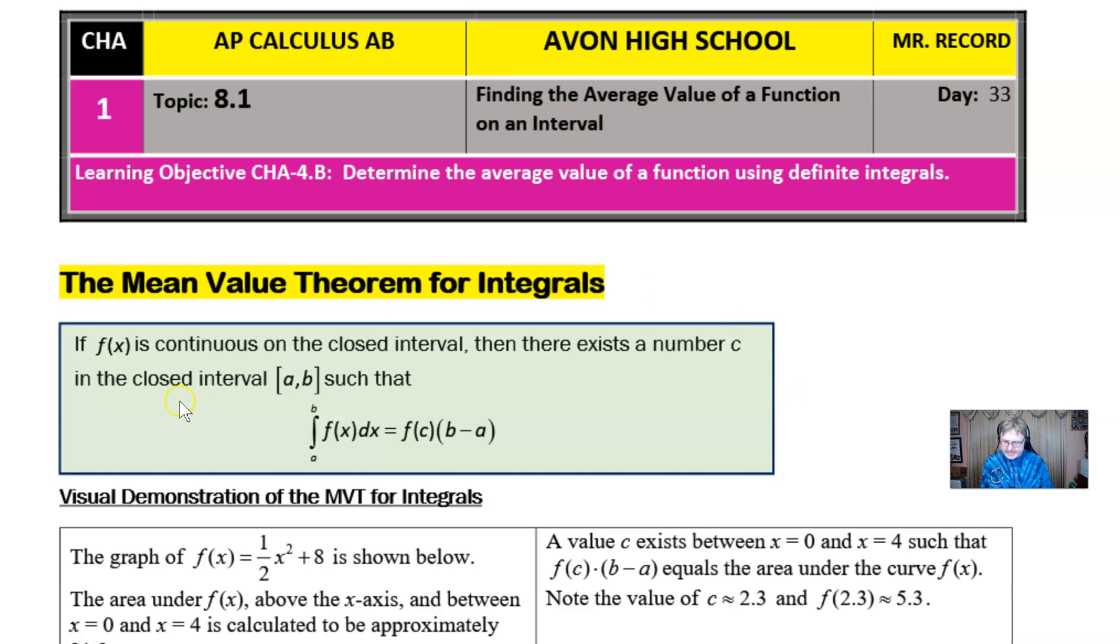The two theorems have the same philosophy, but they're really addressing two completely different things. We're going to dive right into the green box, and it simply says if f(x) is continuous on the closed interval, then there exists a number c in that closed interval [a,b] such that